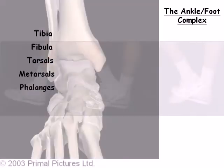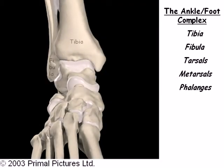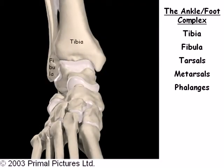The bones of the ankle foot complex include the tibia, the fibula, the tarsals, the metatarsals, and the phalanges.